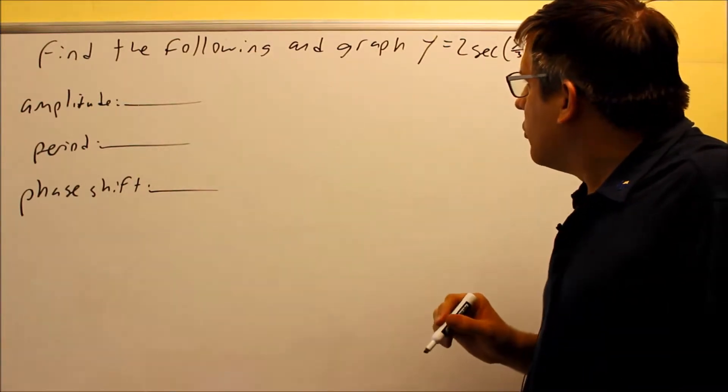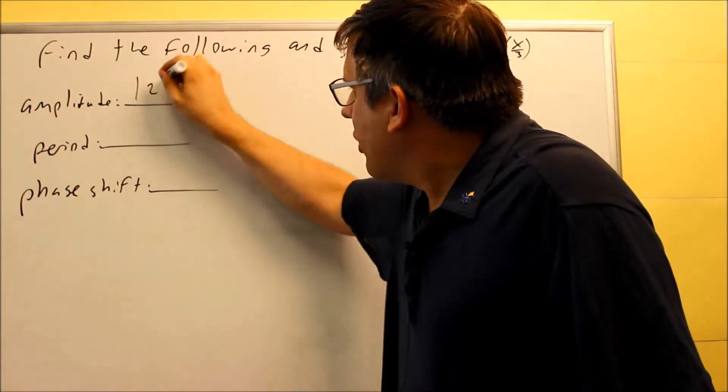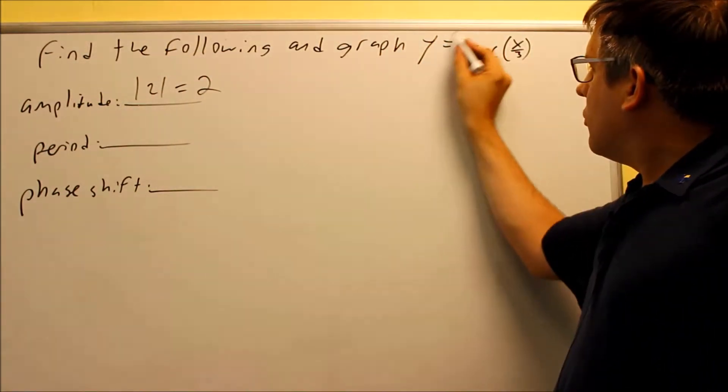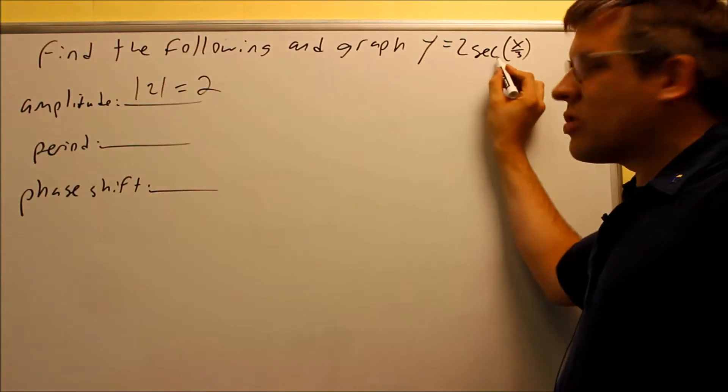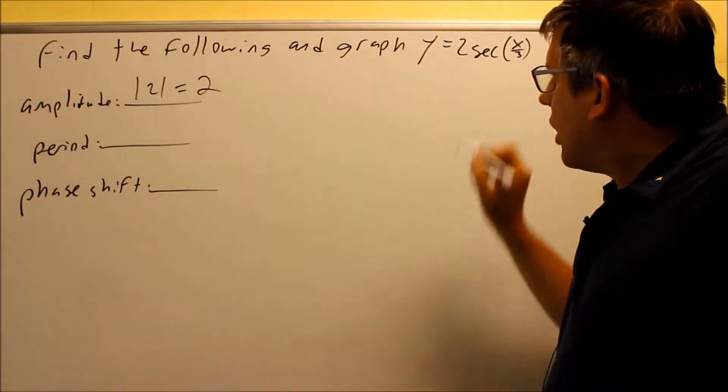So first I want to find my amplitude. My amplitude is going to be the absolute value of 2, which is 2. That 2, this is the one right here. So again, I'm pretending that this is a cosine for right now, and I'm going to do that first.